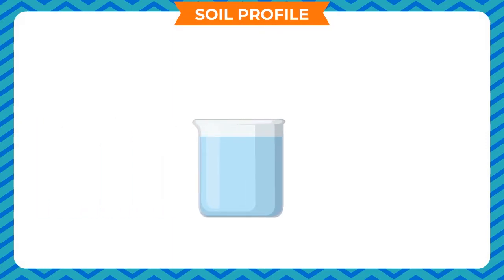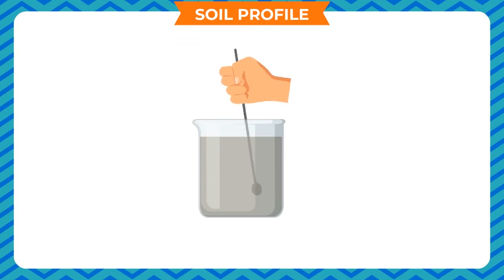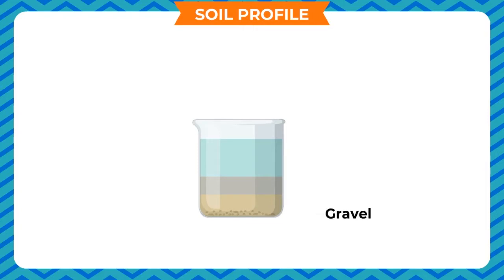Take a glass container and put a handful of garden soil in it. Add some water and shake the container for a little while. Allow the soil to settle down by leaving the setup undisturbed. Observe the different layers: at the bottom will be gravel, above this a layer of sand and silt, then clay on top. The humus, being lighter than water, floats on the water.